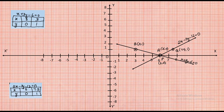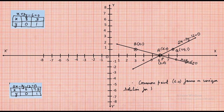We observe that there is a common intersection point for both lines at x = 6 and y = 0. At this point of intersection we obtain the solution for the two equations, confirming the lines are consistent. The common point (6, 0) forms the unique solution for the given consistent pair of linear equations.